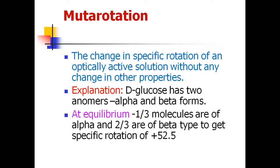Take D-glucose as an example. D-glucose has two anomers which we have already studied: alpha-D-glucose and beta-D-glucose.